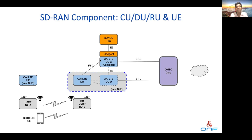Taking a closer look at this E2 functionality, it's what we call an E2 agent that's implemented in OAI. We're using OAI in a split CU/DU mode — you see it here with the CUC, but it could also go with the DU. We're using OAI in our testbed and in our CI along with our core, which we call the OMEC. We use OAI both on the RAN and for the UE as well, and we're also using commercial UEs to test.